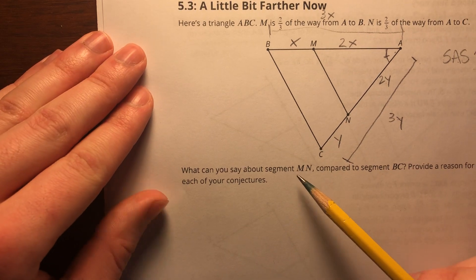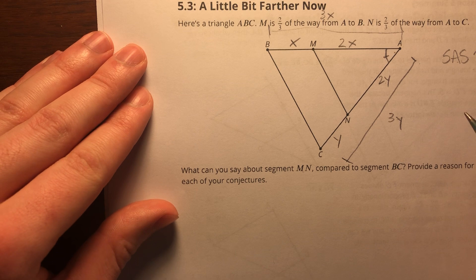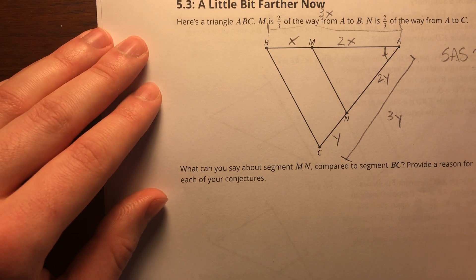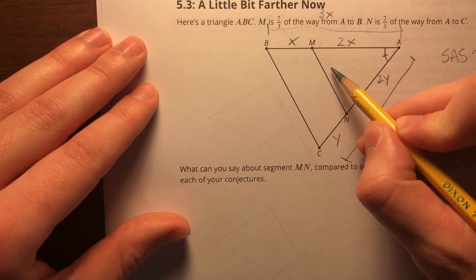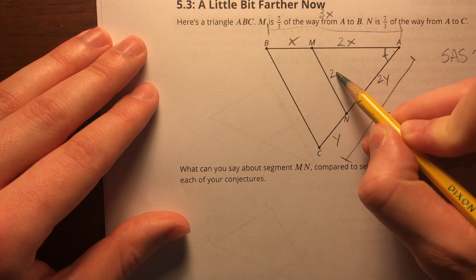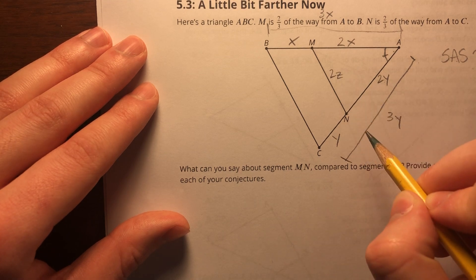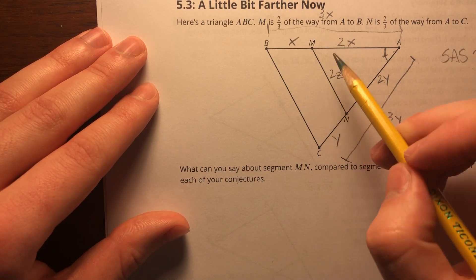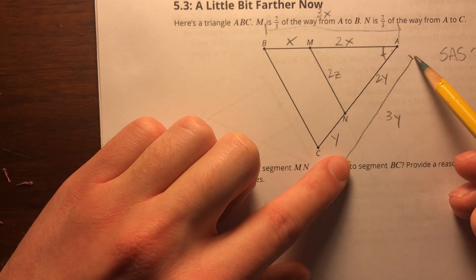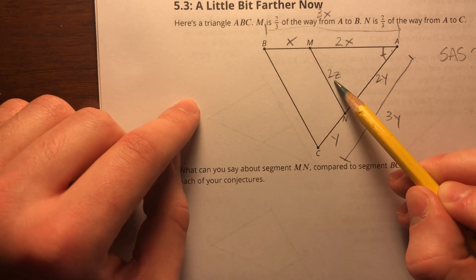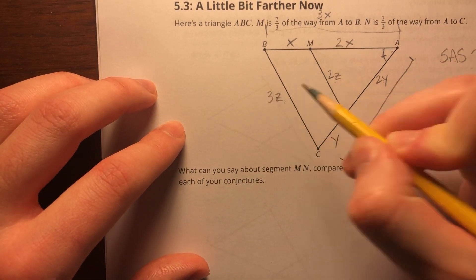So what can I say about segment MN compared to segment BC? Well, one thing we can do is the same view that in the last problem. Let's call this 2z, since I've got 2x, 2y here, let's call this one 2z. Using that same sort of reasoning, if this is 2x, this is 3x, this is 2y, this is 3y, if this is 2z, then this side BC is going to be 3z.